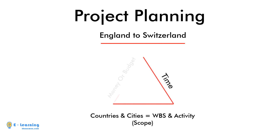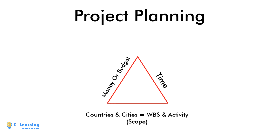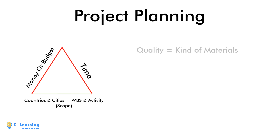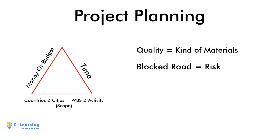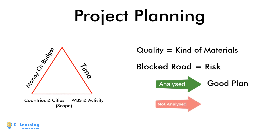The time and money — or what we call budget — also apply in the project. Quality refers to the kind of materials you use in the project. The blocked road is the risk. If you have analyzed these blocked roads before planning, it means you have a good plan. If you have not analyzed them, your plan will face delays.